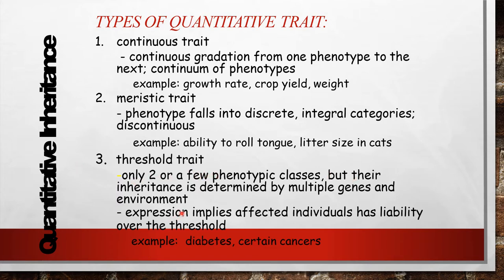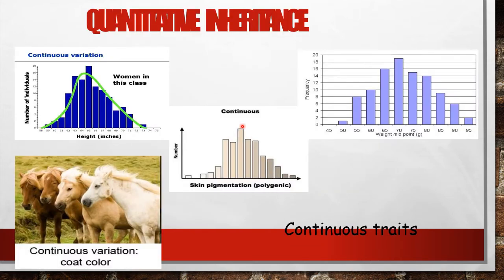For threshold traits, their inheritance is determined by multiple genes and environment. Expression implies the affected individual has a liability over a threshold. Examples include diabetes and certain cancers. Things that come under continuous variation include height, skin pigmentation, weight, and coat color — these are all examples of continuous traits.